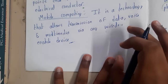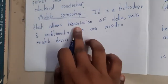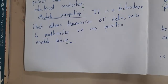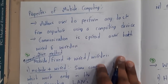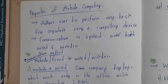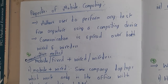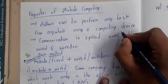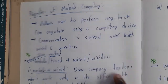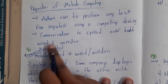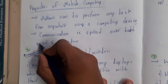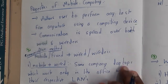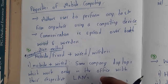There are a few definitions for mobile computing — in total, three different ones. Mobile computing is a technology that allows the transmission of data, voice, and multimedia via a wireless-enabled device. The first definition and this one are essentially the same, so you can write either one. Moving on to properties of mobile computing: it allows a user to perform any task from anywhere using a computing device. Communication is spread over wireless — since we are talking about mobile computing, it's better to focus on wireless specifically.